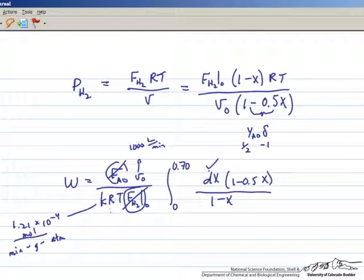K equals 1.21 times 10^-4. The gas constant is 0.082 atmosphere-liters per mole-Kelvin, and the temperature is 400 Kelvin. The value of this integral is 0.952.